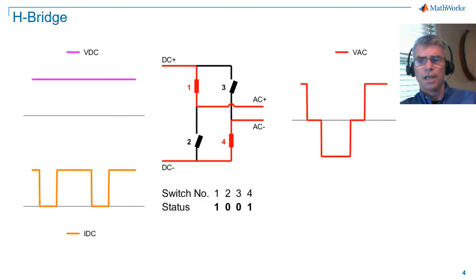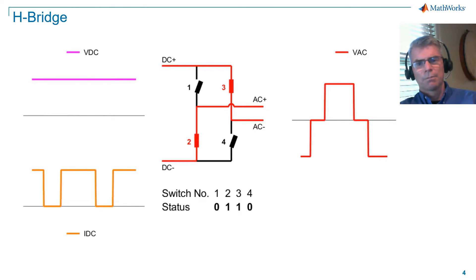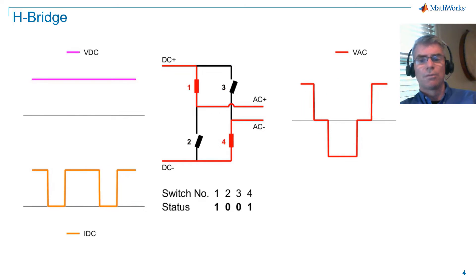We still have work to do to emulate a sinusoid, but we're making progress. Because the AC voltage is not a pure sinusoid, we're introducing harmonics onto the system. That is, frequency components that are higher than our AC frequency. We'll cover harmonic analysis in the next tutorial.